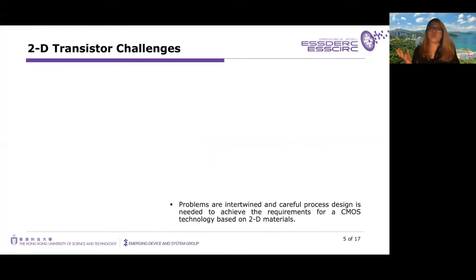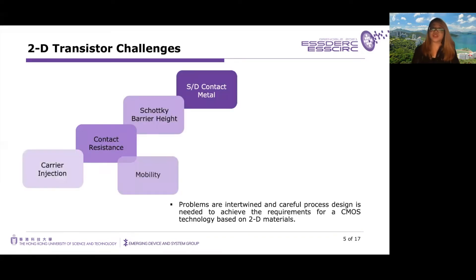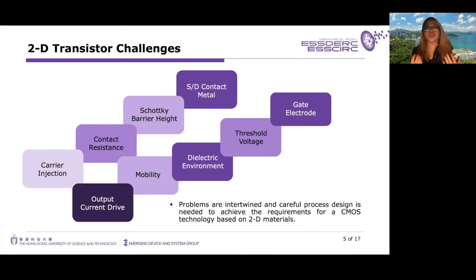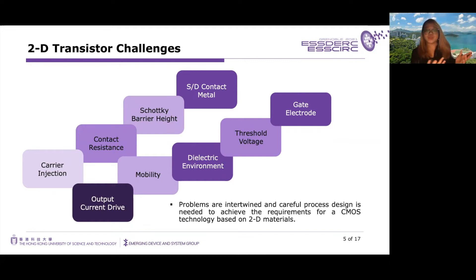Now let's talk about what is the problem in meeting the CMOS circuit requirements. At the transistor level, we already have problems that are intertwined together. The decisions needed in selecting the source-drain metal contacts to the 2D semiconductor, its dielectric environment, the gate electrode, and the processing conditions all need to be carefully designed. The most critical design consideration is the source-drain electrode, because typically there exists a high Schottky barrier height between the 3D metal and the 2D semiconductor junction, which introduces a high contact resistance and inhibits carrier injection from the source to the channel, so the output current drive usually suffers.